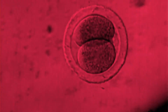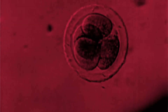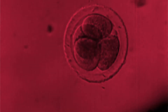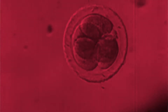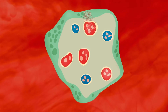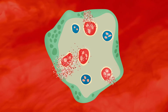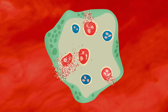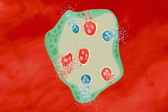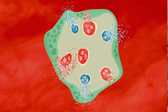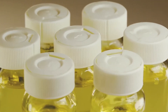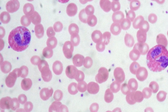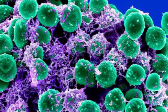The fused syncytiotrophoblast cell sheet is invasive, and is what implants the embryo to the wall of the mother's womb. Later, the syncytiotrophoblast facilitates the flow of nutrients and oxygen between the mother and the fetus, and its functions don't stop there. It also produces hormones, regulates the immune response, and protects the fetus from pathogens.